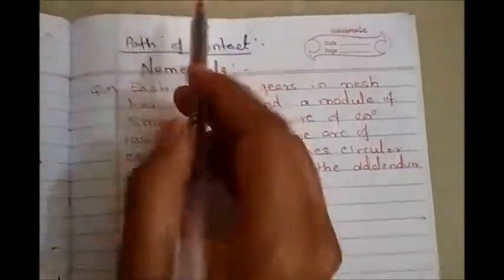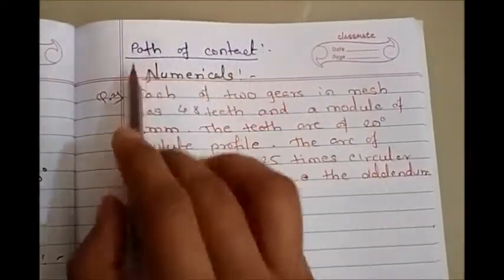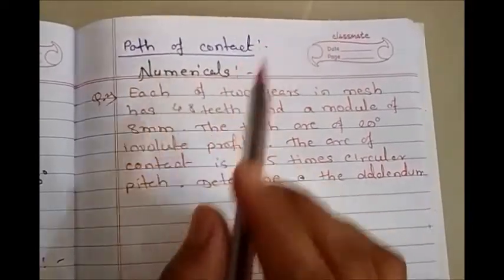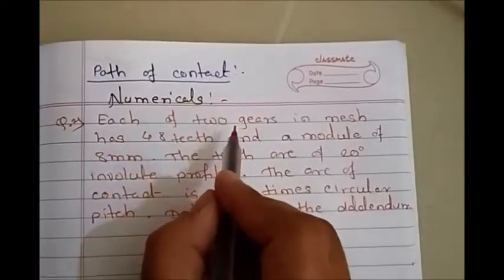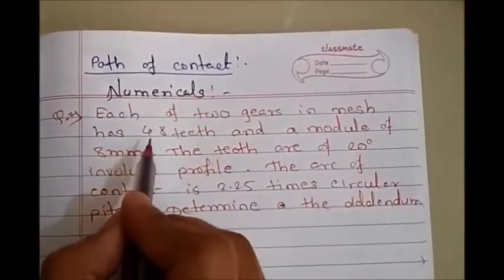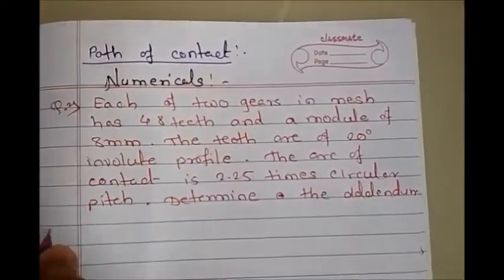Let's discuss the numerical problem based on the concept of path of contact, arc of contact, and contact ratio. Here we have the statement: each of two gears in mesh has 48 teeth. Let me write down the given data simultaneously.